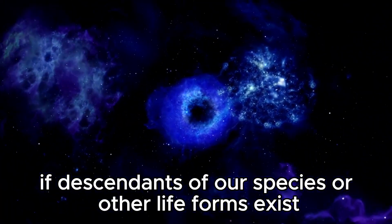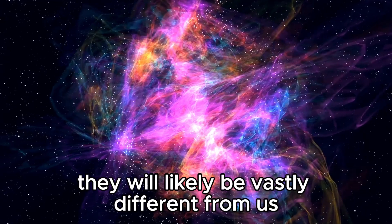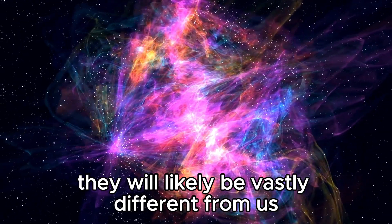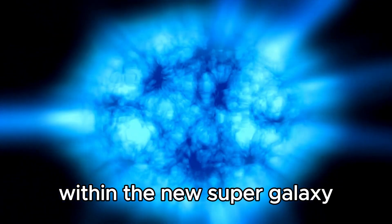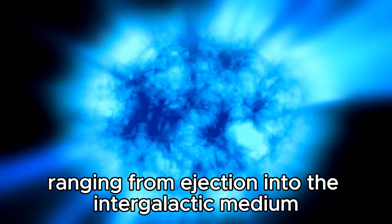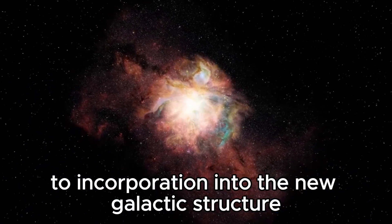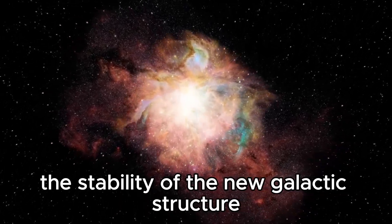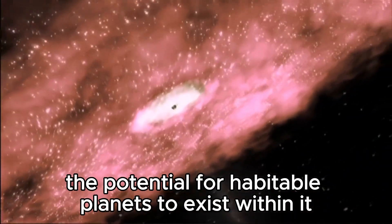If descendants of our species or other life forms exist billions of years from now, they will likely be vastly different from us in evolutionary history. The fate of our solar system within the new supergalaxy remains uncertain, with possibilities ranging from ejection into the intergalactic medium to incorporation into the new galactic structure. The stability of the new galactic structure will influence the potential for habitable planets to exist within it.